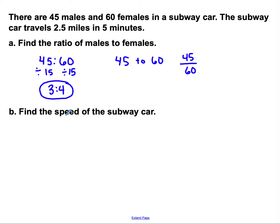Now we're going to find the speed of the subway car. This is not a ratio comparing two parts — it's actually a rate, showing how one thing compares to another where they depend on each other. For our car, it's 2 and a half miles in 5 minutes. When we have speed, we always do distance divided by time. So that's 2 and a half miles over 5 minutes.